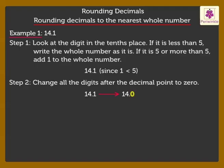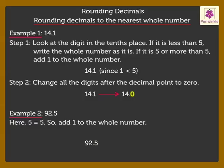Now, let's solve one more example. Look at the digit in the tenths place, which is 5 here. As the rule states, if the digit is 5 or more than 5, we add 1 to the whole number. Hence, we add 1 to 92 and change all the digits after the decimal point to 0. Thus, we get the answer as 93.0.